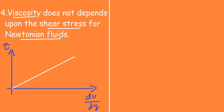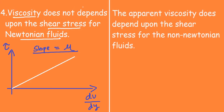This straight line is the graph for Newtonian fluids. The slope of this graph gives the value of mu, the viscosity. Since it is a straight line, the slope is constant, and hence viscosity does not depend upon the shear stress for Newtonian fluids. But for non-Newtonian fluids, the apparent viscosity does depend upon the shear stress.